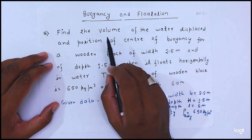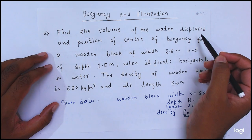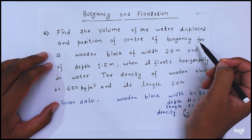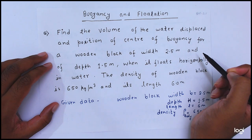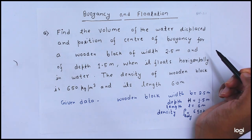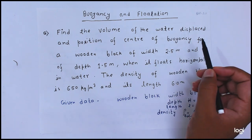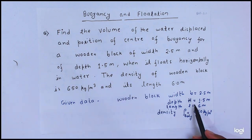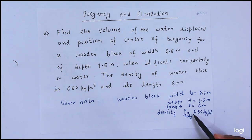The question is: find the volume of the water displaced and the position of the center of buoyancy for a wooden block of width 2.5 meter and depth 1.5 meter when it floats horizontally in water. The density of the wooden block is 650 kg per meter cube and its length is 6 meter.